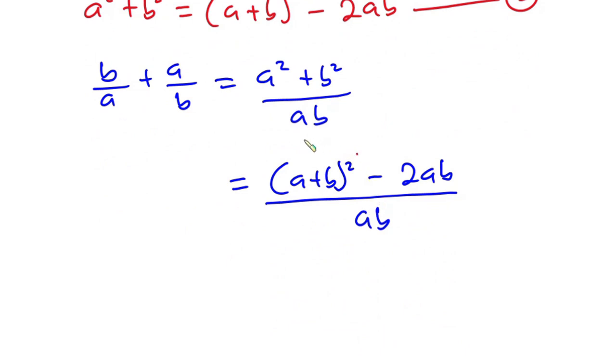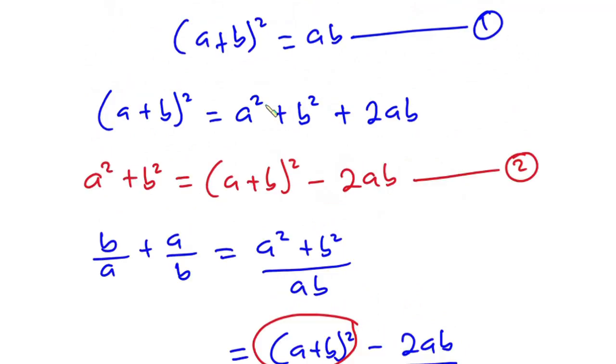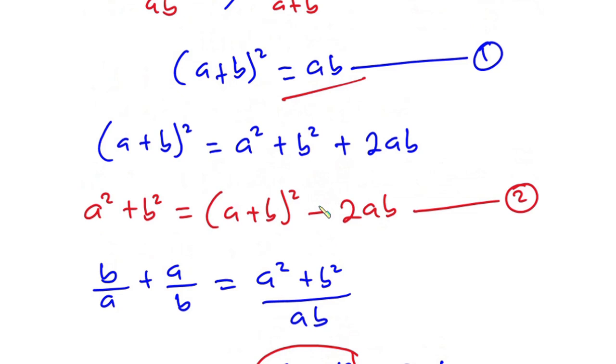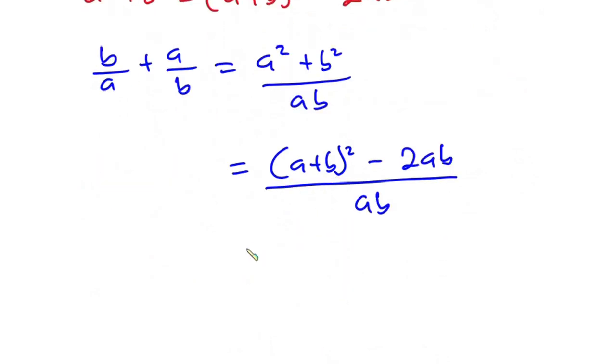And from equation 1 we know that a plus b squared equals ab. So in place of this whole thing I'm going to put ab. So we have ab minus 2ab over ab.